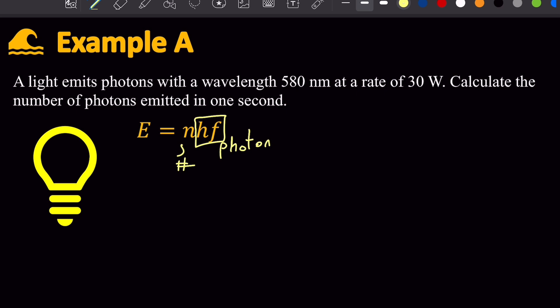Now the question gives wavelength, but this formula here uses frequency. So I'm going to use the fact that light speed equals light frequency times wavelength to get that the frequency is c over wavelength.